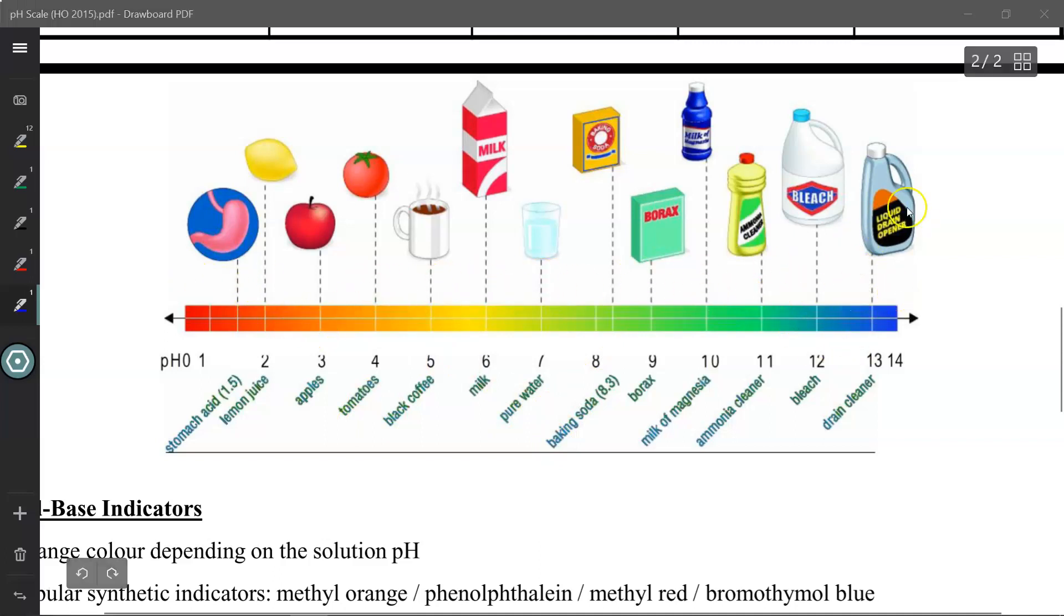This diagram shows you roughly how acidic or how basic each of these common household items are. Drain cleaner and bleach are very basic, baking soda is only slightly basic, while milk is slightly acidic, and of course water is neutral in the middle. Apple juice and lemon juice are both on the acidic side of things. And of course stomach acid right over here, pH of 1.5. As we will learn in our biology unit, the stomach acid is used to break down foods.